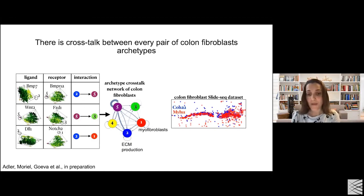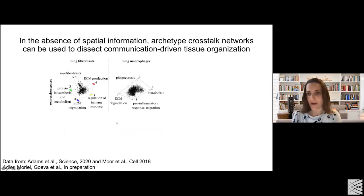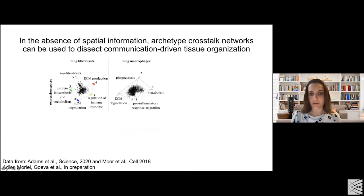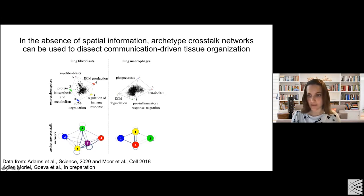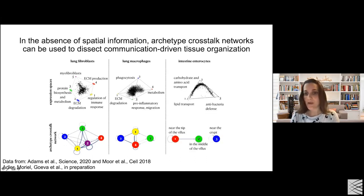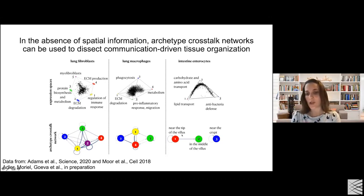We can also use our approach when we don't have spatial information about cells. We analyzed single-cell data of lung fibroblasts and macrophages. In the lung, fibroblasts also fit in a five-vertex simplex trading off between five tasks, and macrophages lie in a tetrahedron with four different tasks. When we infer the archetype crosstalk network, there is a lot of crosstalk between different archetypes. Comparing to intestinal enterocytes, which are influenced more by a global oxygen gradient, we see less interaction between archetypes, and interaction is restricted to cells close to each other in tissue space.